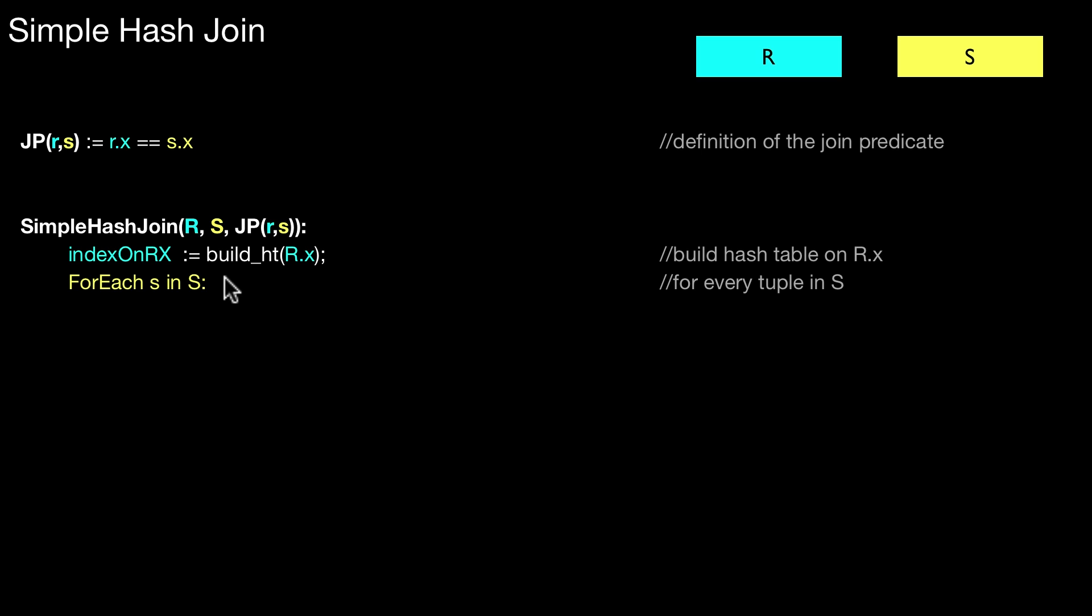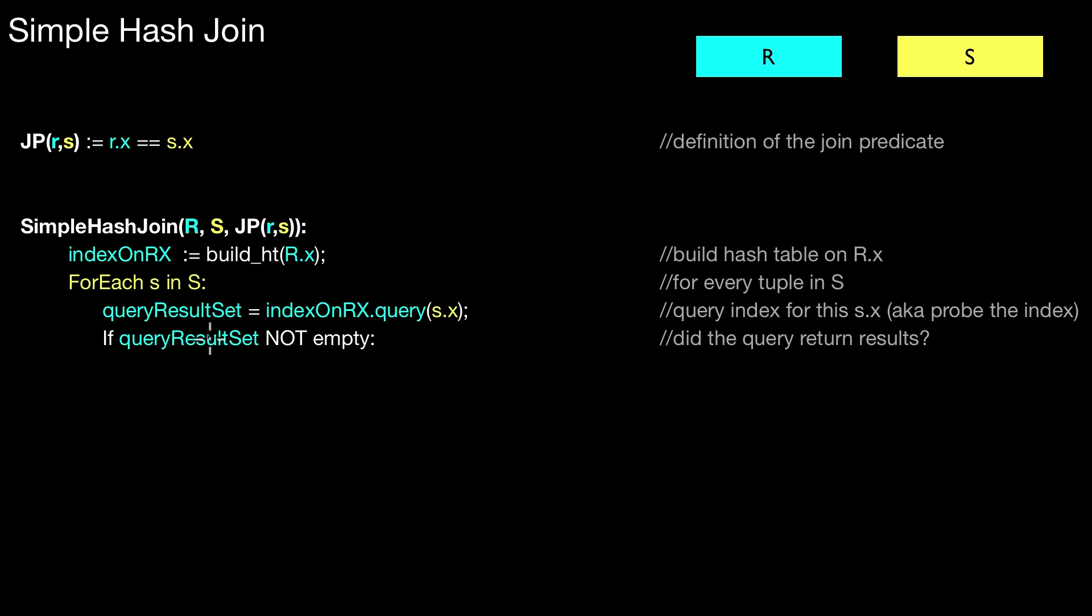So then again we run a loop that is for every element of S, for each small s in the big S set, we probe this hash table. So we query this hash table that we created here again using S.x as a key to query. So again this is a point query which is well supported by hash tables and we use this key as it appears in the equi-join condition above. And whatever is returned here must be used for the join result.